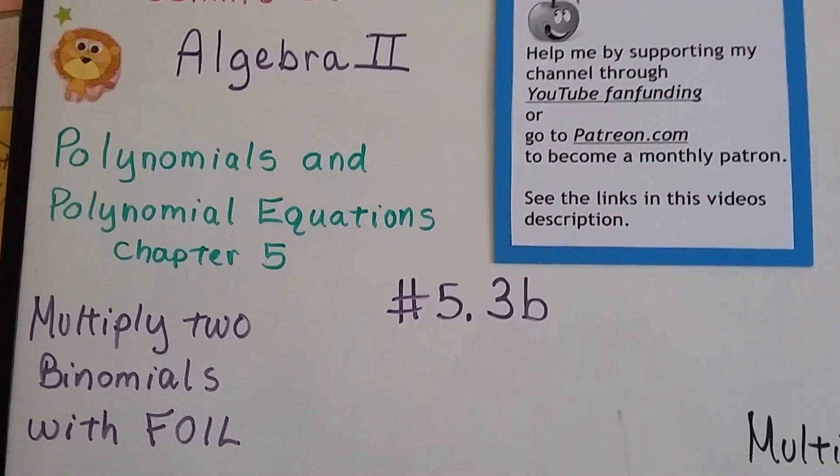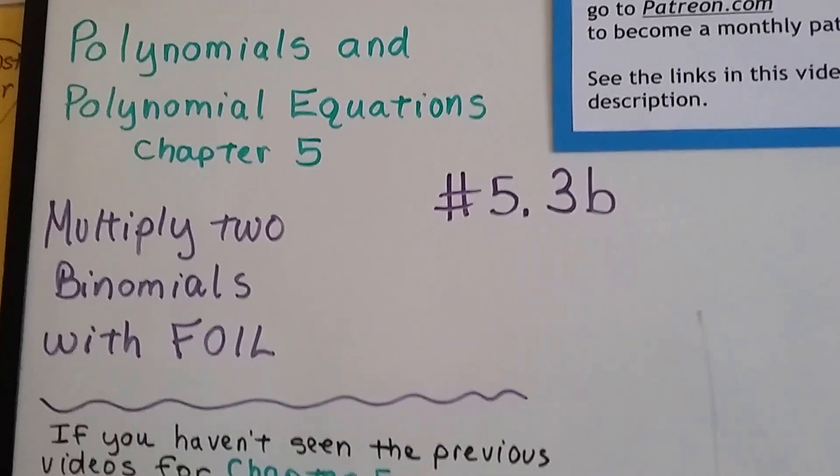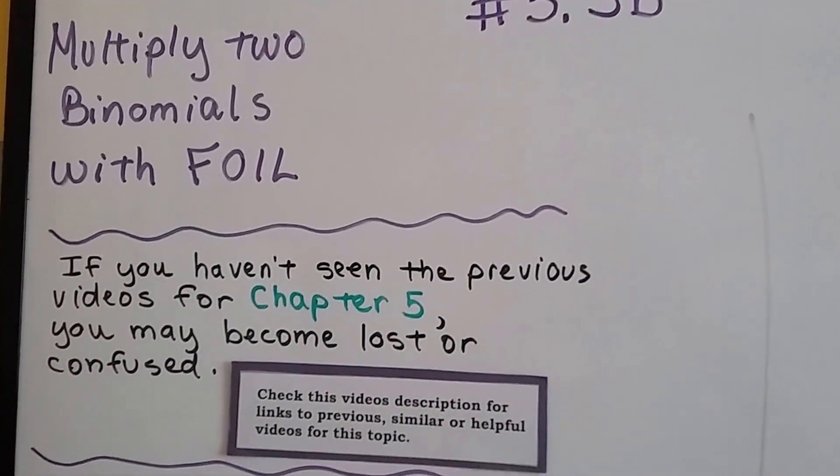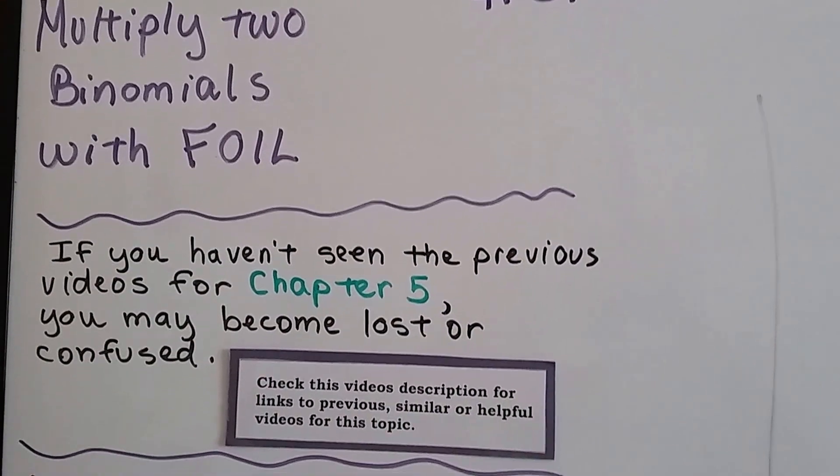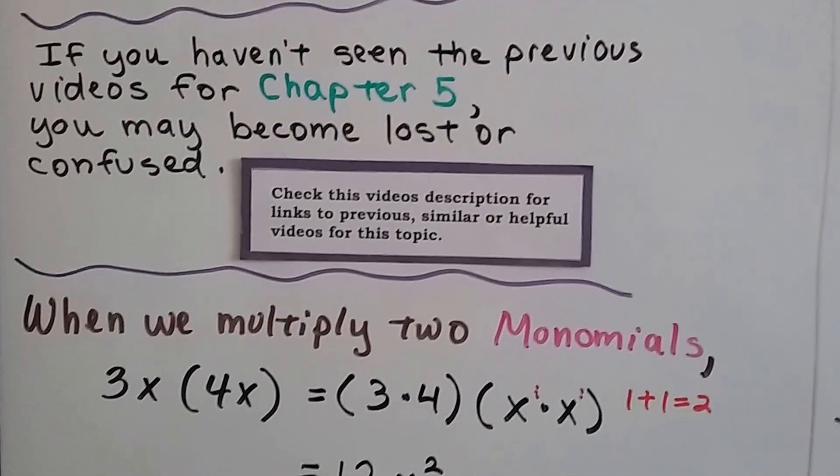Algebra 2, 5.3b, multiply two binomials with FOIL. If you haven't seen the previous videos for Chapter 5, you might become confused, so there's links in this video's description so you can watch those first.